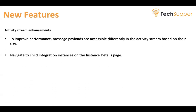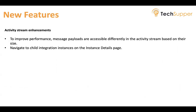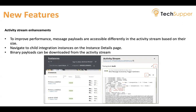The activity stream has been enhanced. To improve performance, message payloads are accessible differently in the activity stream based on their size. Navigate to the child integration instance on the instance detail page. You can now also download binary payloads — for example, if you have attachments, you can download them as well.